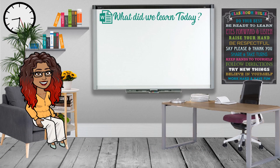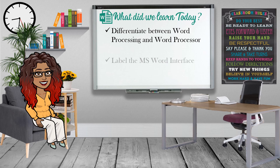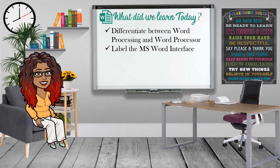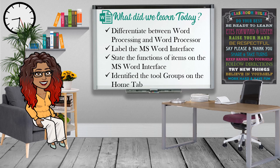So, what did we learn today? We learned the difference between Word Processing and Word Processor — Word Processing is the action, whereas Word Processor is the application program. We were able to label the Microsoft Word interface and state the functions of items on the interface. Lastly, we looked at the tool groups on the Home tab.